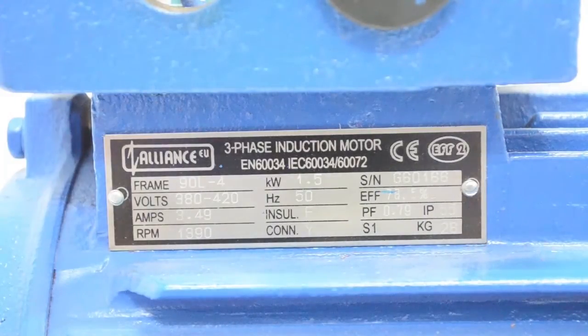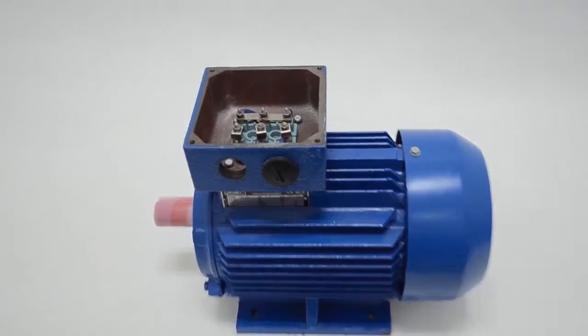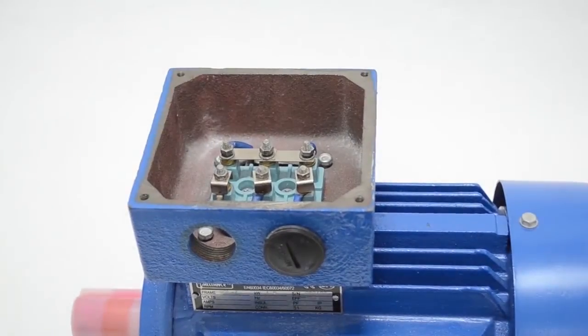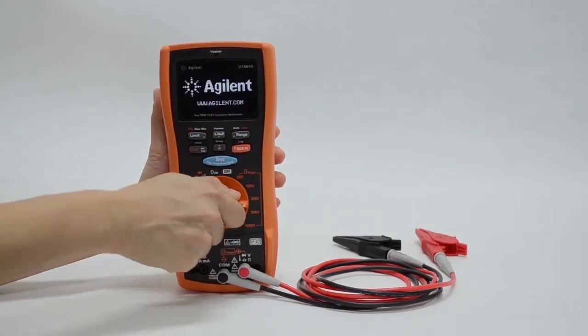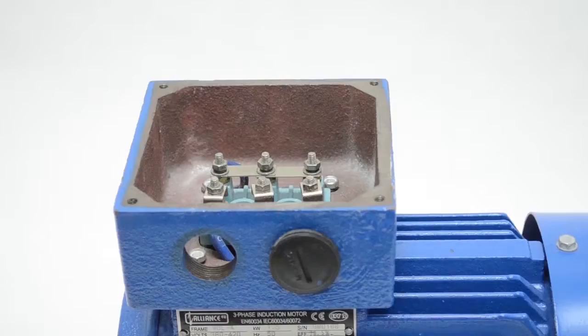This is the electrical junction box of the motor. Select 500 volt test voltage to measure insulation resistance between all three phases with reference to ground.